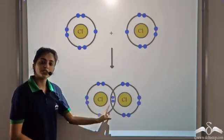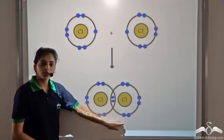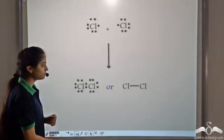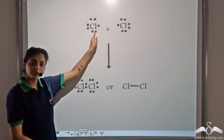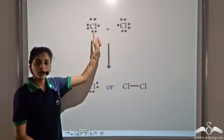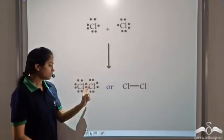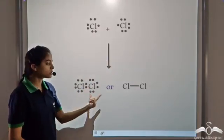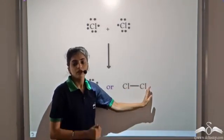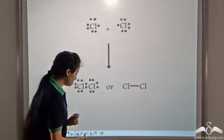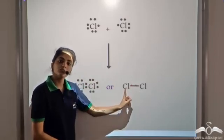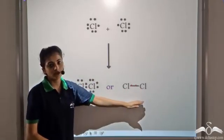Each Chlorine atom now has eight electrons. Both of them satisfy the octet rule and hence they form a covalent compound. We write the chemical symbol and show the valence electrons — each Chlorine atom has seven valence electrons and they share one electron. This is also represented by drawing a single covalent bond between the two atoms, which means two electrons are being shared. So Cl₂ is a covalent compound.